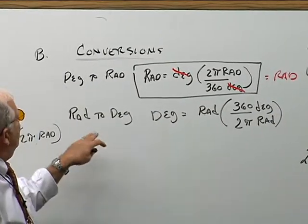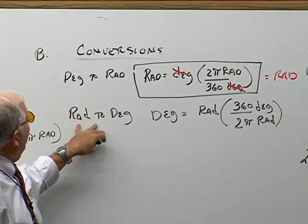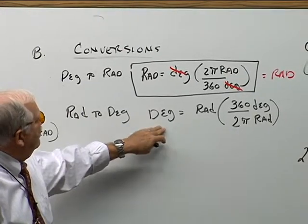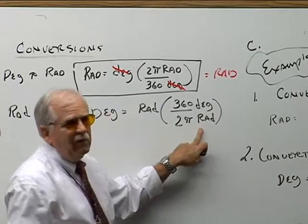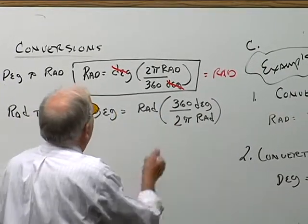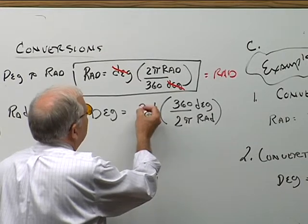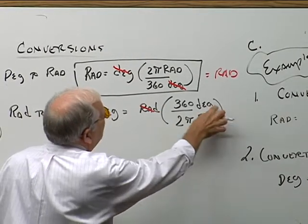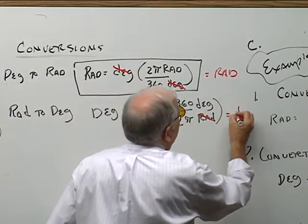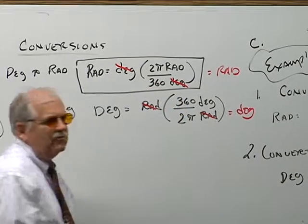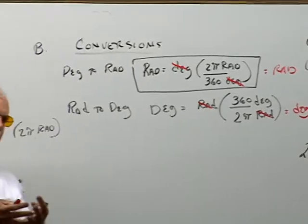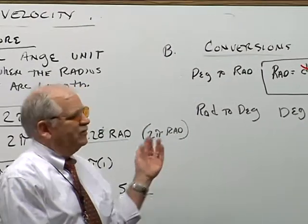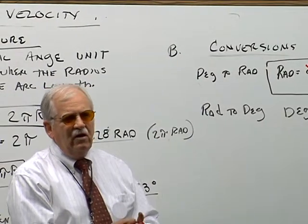And then conversely, we have rads to degrees. Then I take degrees equals rads times 360 degrees over 2π rads. Guess what? Here we have rads here and rads here, and the answer comes out in degrees. Simple enough. So you're just going to remember what that relationship is between the two and be able to use these conversions to help you.